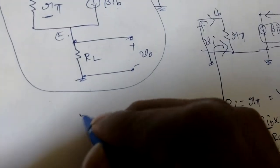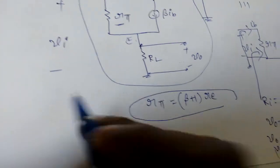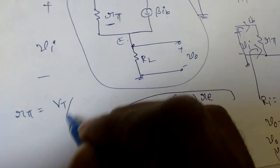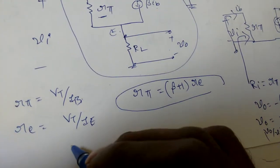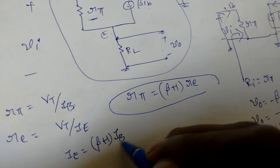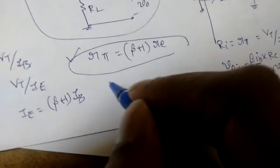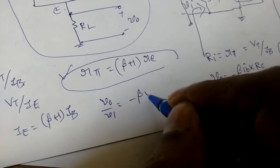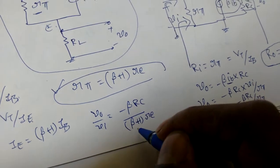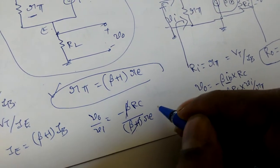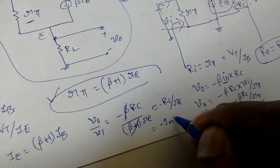The relationship between r_pi and r_e: r_pi equals (beta + 1) times r_e. This comes from r_pi = V_T / i_b and r_e = V_T / i_e, and since i_e = (beta + 1)·i_b, substituting gives r_pi = (beta + 1)·r_e. Therefore, A_v = minus beta·r_c / [(beta + 1)·r_e]. Approximating beta + 1 ≈ beta, the gain simplifies to approximately minus r_c / r_e, which can also be written as minus g_m times r_c.